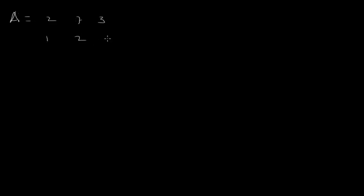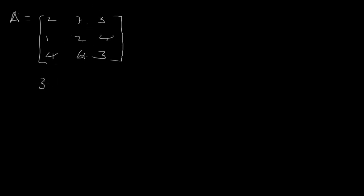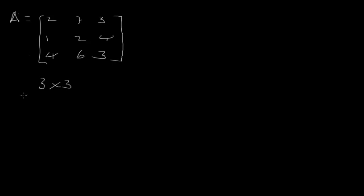For example, if we have matrix A which has 2, 7, 3 and 1, 2, 4 and 4, 6, 3, this matrix can be identified by its number of rows and columns, known as its order. This matrix has three rows and three columns, so it's a three by three matrix. We looked at how to identify matrices in that way, and then we also looked at multiplication of matrices by a scalar constant.